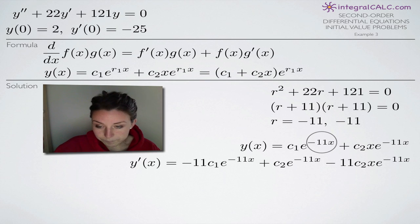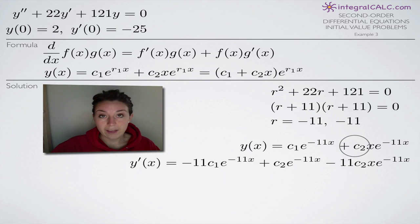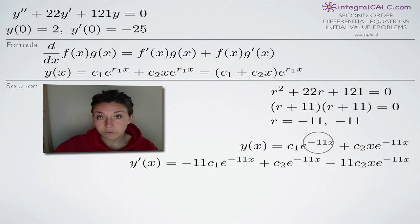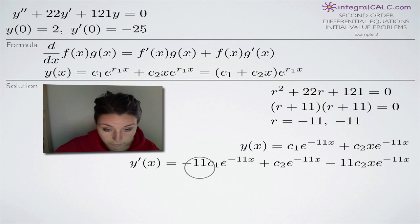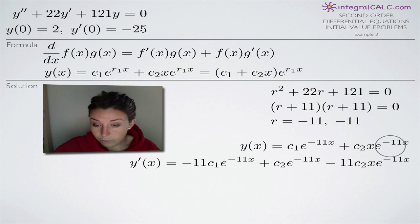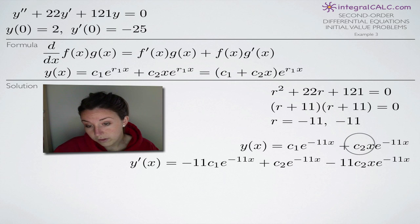We'll take the derivative of y(x), which is y'(x), and we're going to need the product rule for the second term. For the first term, we treat c₁ as part of the coefficient — it stays right where it is. The derivative of e^(−11x) is −11e^(−11x), so we multiply negative 11 out front and leave c₁ in place. For the second term we apply the product rule, treating f(x) = c₂·x and g(x) = e^(−11x).